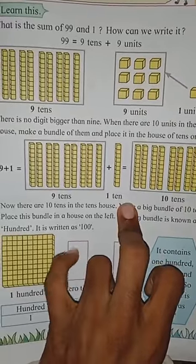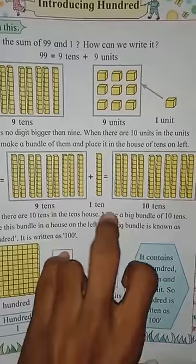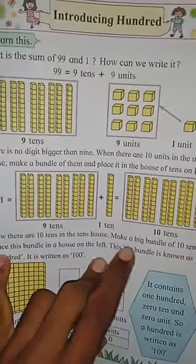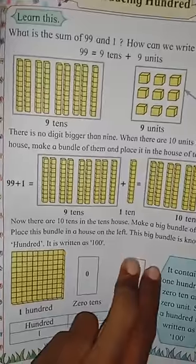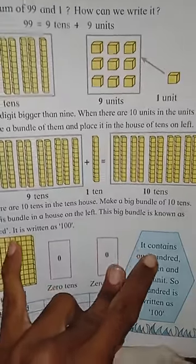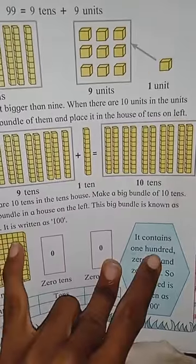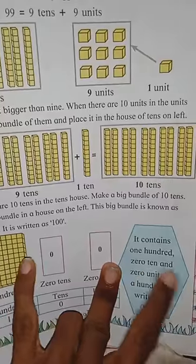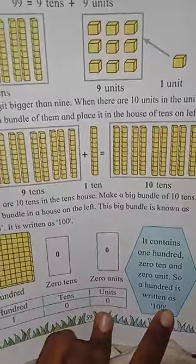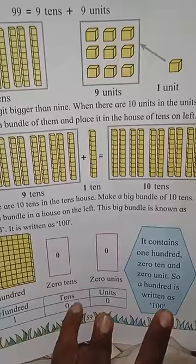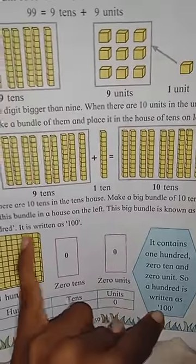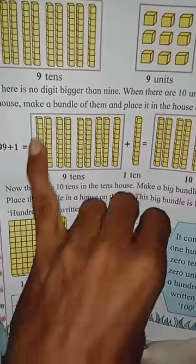Understood? So that means nine tens and one ten — that is ten tens. One hundred contains one zero zero — zero tens and zero units. So hundred is written as one zero zero. Hundred is how you have to write it. It is written as 100.